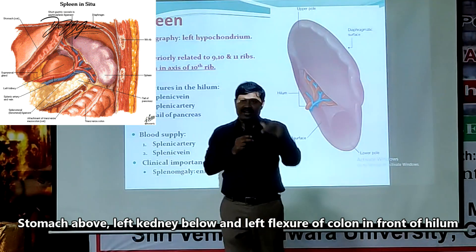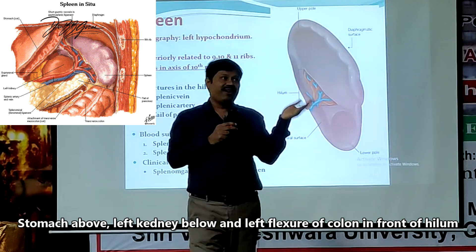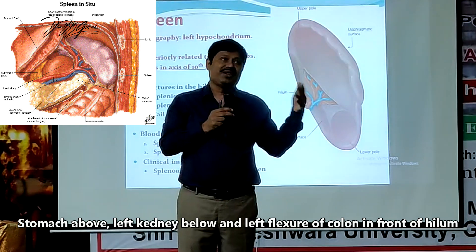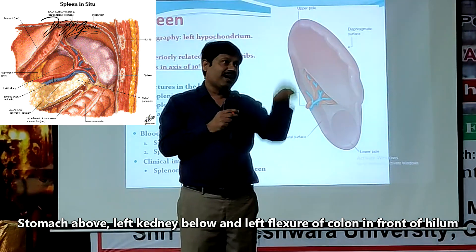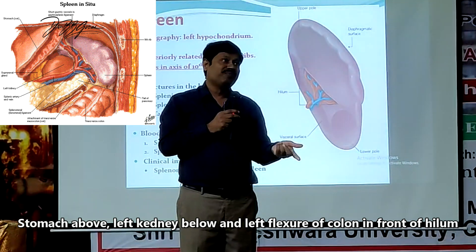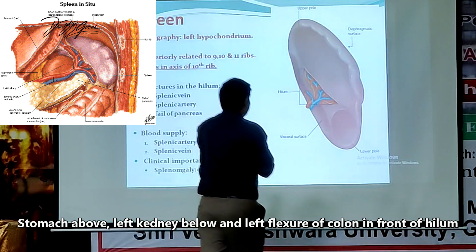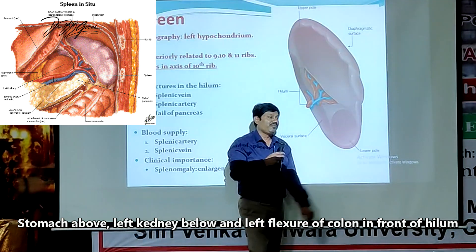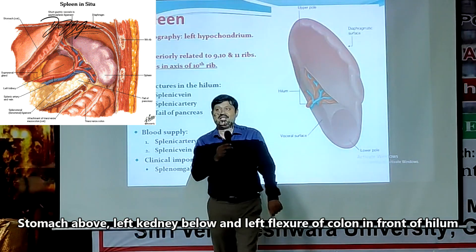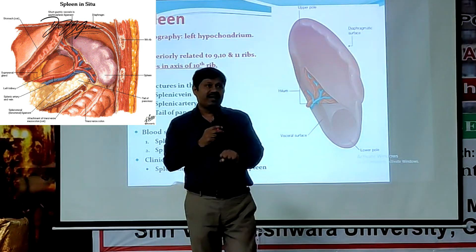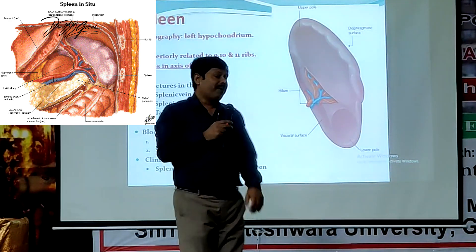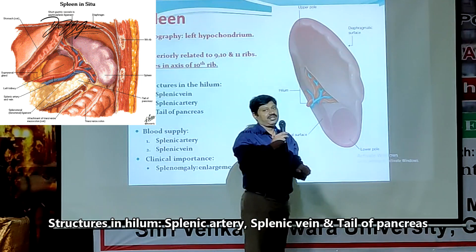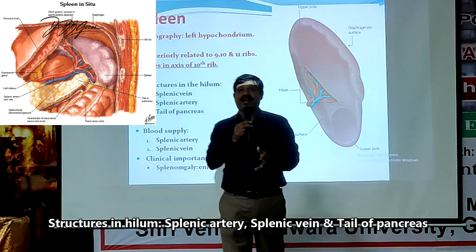The colon flexure here is the left flexure. Left flexure is also known as the splenic flexure of the colon. The transverse colon meets the descending colon at this point — that is the splenic flexure. So in this relationship, if you have a hilum, what are the structures within the hilum?